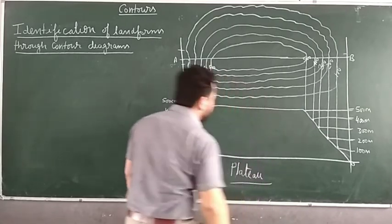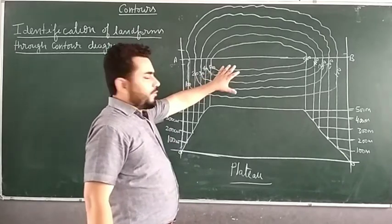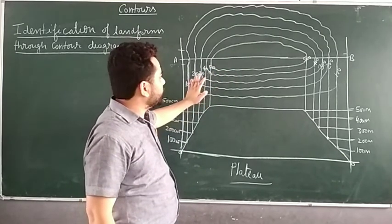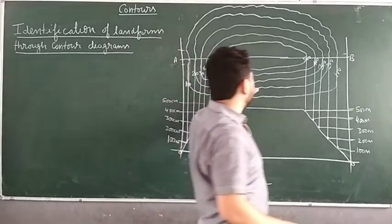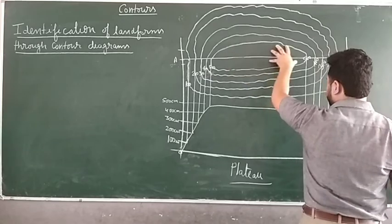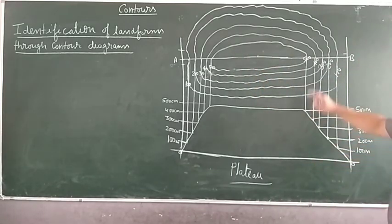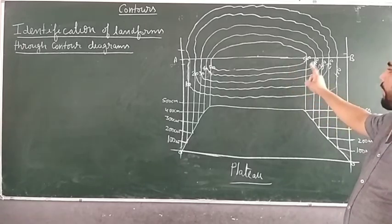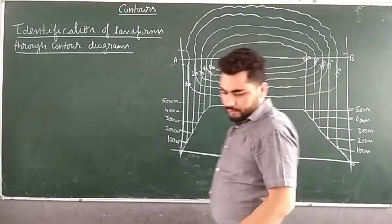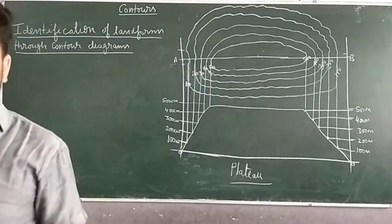In the exam, you will be given this type of contour line pattern. If on a toposheet this pattern is having too much space in between, then you will have to name that particular landform as a plateau. This was all about the contour lines. Thank you so much.